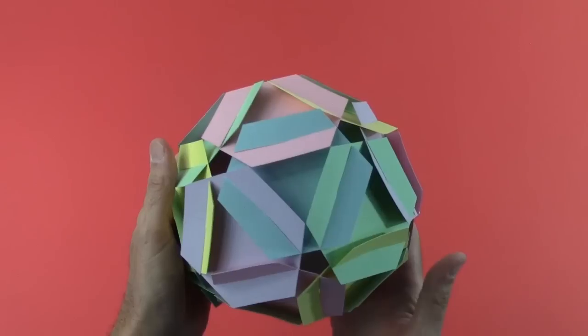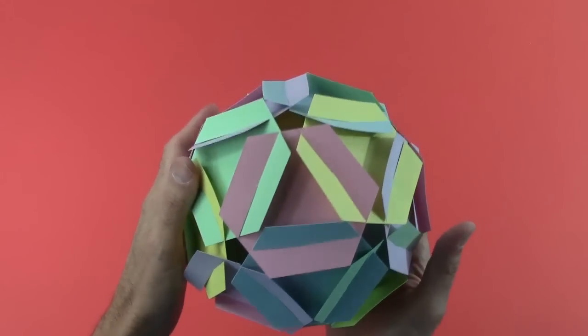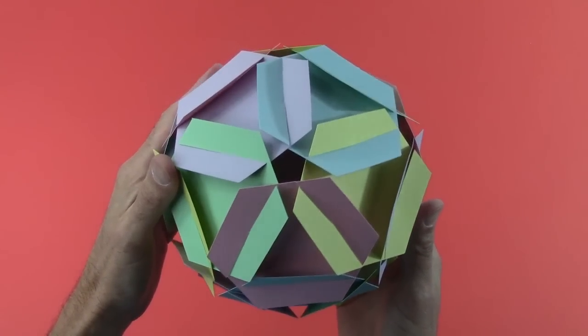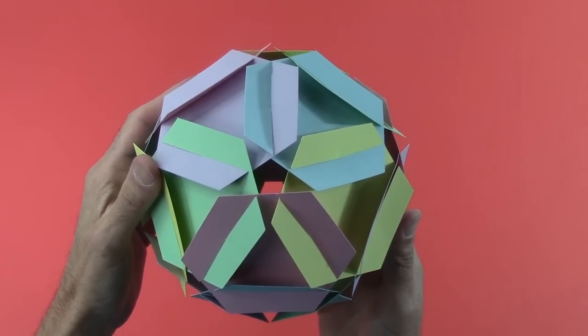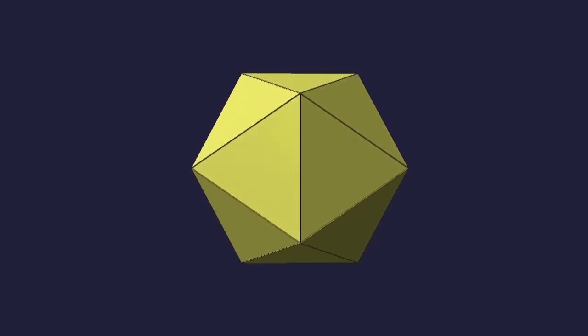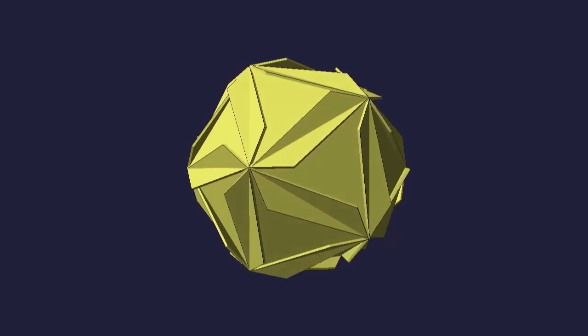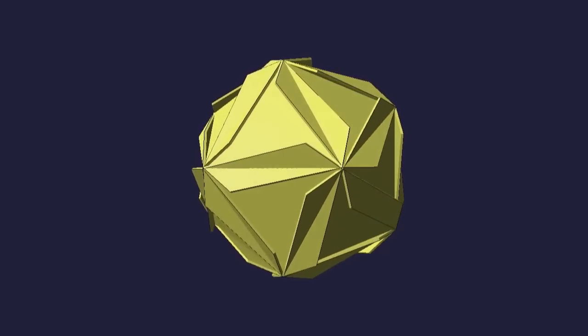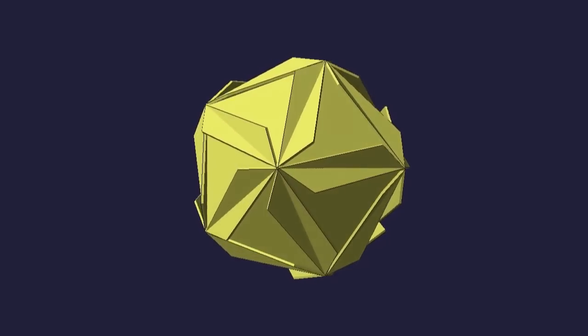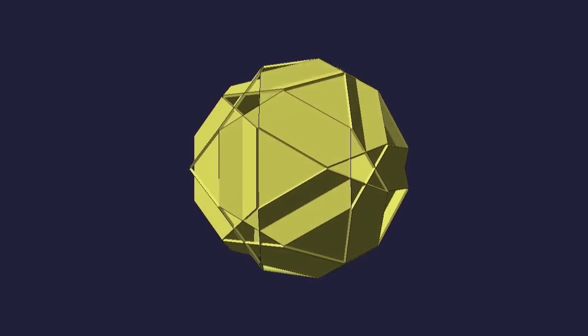Here's a second construction, which is very similar. It consists of 20 regular hexagons. You can also understand it by starting with a regular icosahedron, but now we expand and adjust each triangular face to have six vertices instead of three, arranged as a regular hexagon.